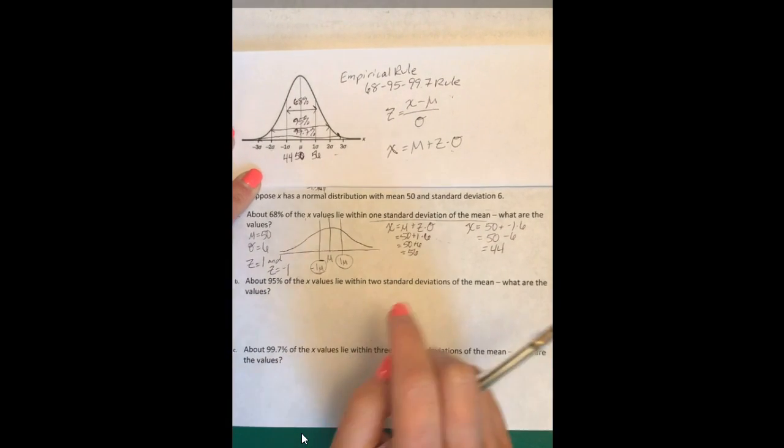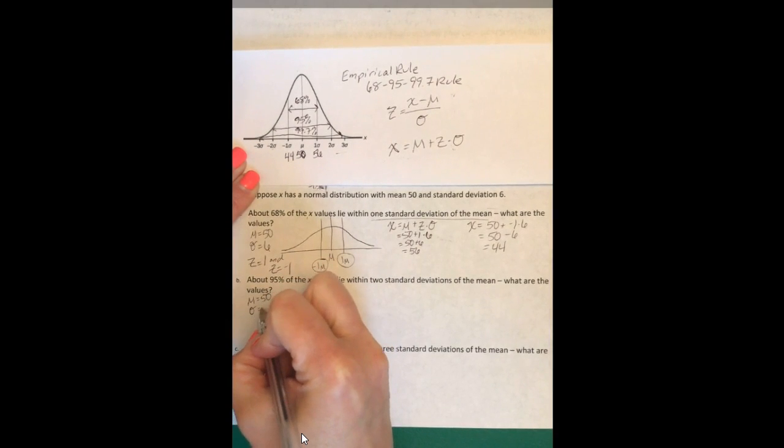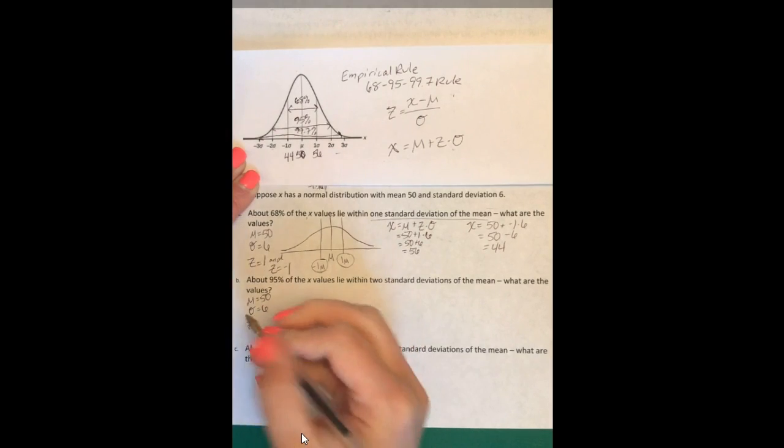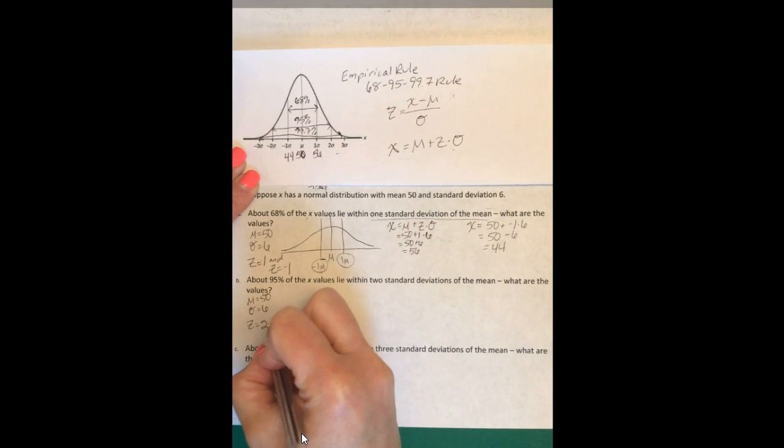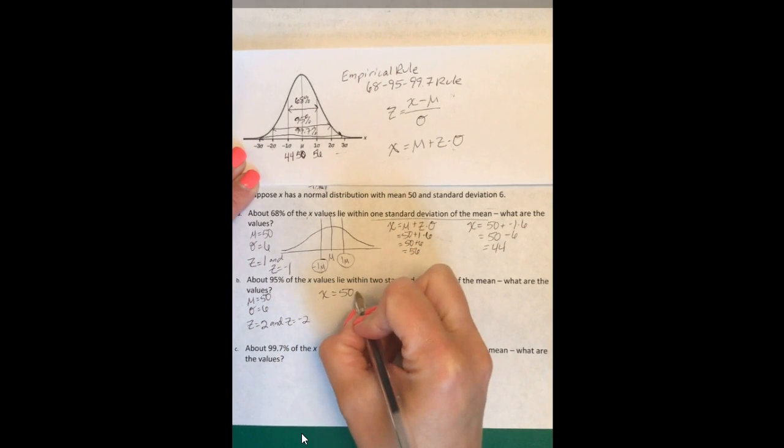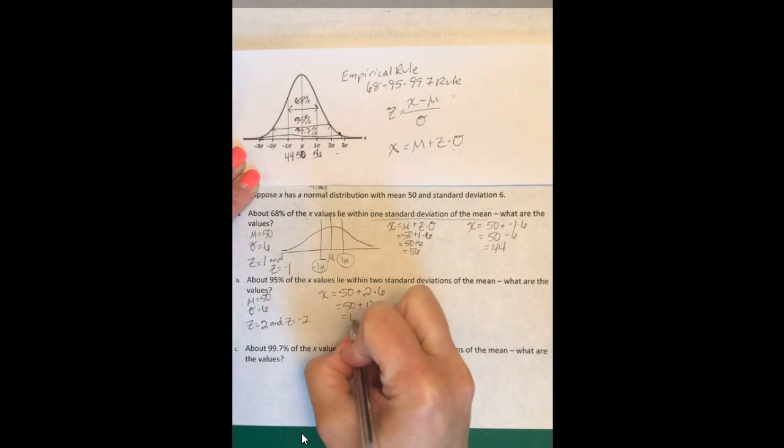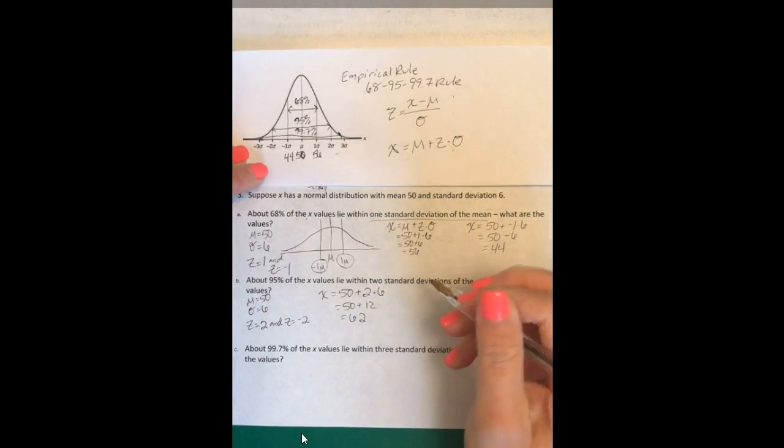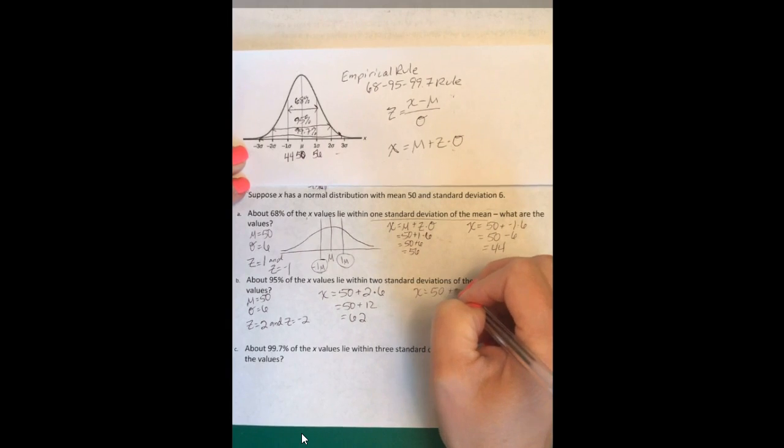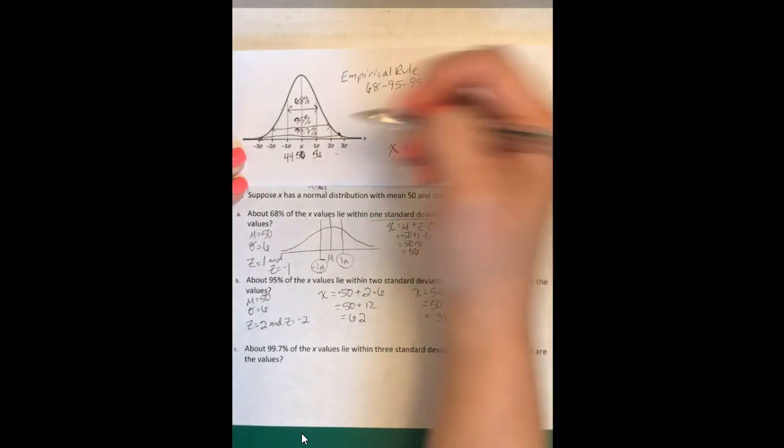Here the Z value at 95% is two and Z is negative two. So 50 plus 2 times 6, 50 plus 12 is 62. And then 50 plus negative 2 times 6 is 50 minus 12, which is 38. So that means this is 62 and this is 38.